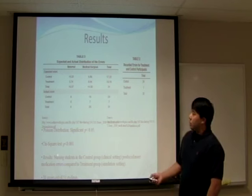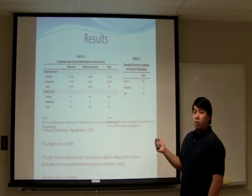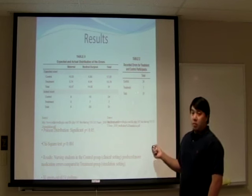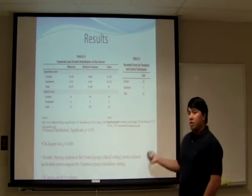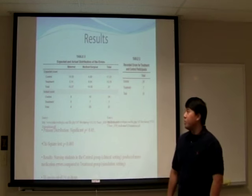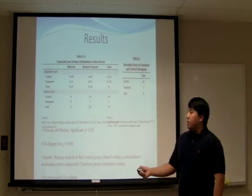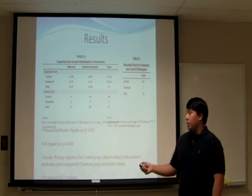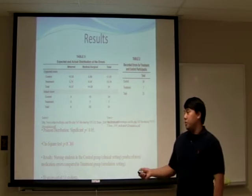The results were that there were 31 errors out of 54 students — 24 were in the control group and 7 in the treatment group. So there was a higher number of errors in the control group for the clinical experience versus the simulation experience students. As you can see here, the means are higher in the control and total, and lower in the treatment. A Poisson distribution was done with a significance level of p = 0.05, and a chi-square test was done with a significance level of 0.001.